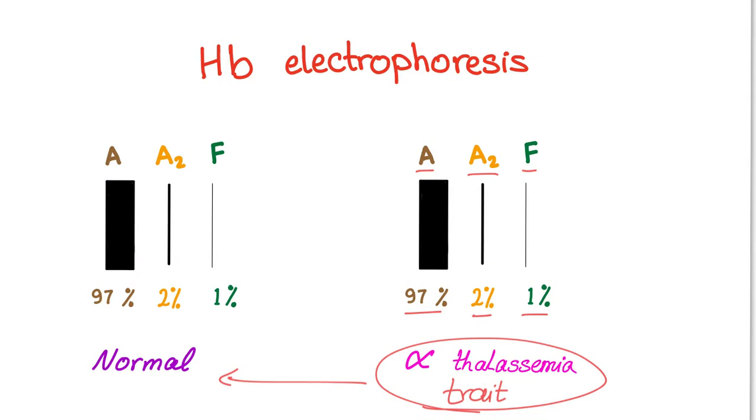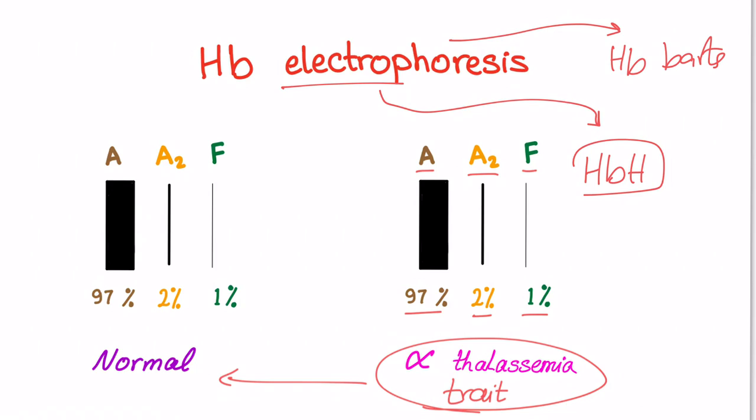However, if three genes are deleted, it's called hemoglobin H disease. So in hemoglobin H disease, what will be the hemoglobin electrophoresis? It will detect hemoglobin H. If four genes are deleted and it's called hemoglobin Bart's, what will be discovered on electrophoresis? The hemoglobin Bart's. So alpha thalassemia trait, hemoglobin electrophoresis is normal. Hemoglobin H disease will get hemoglobin H. Hemoglobin Bart's will get hemoglobin Bart's.